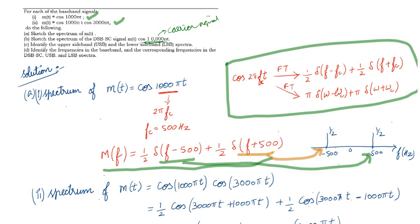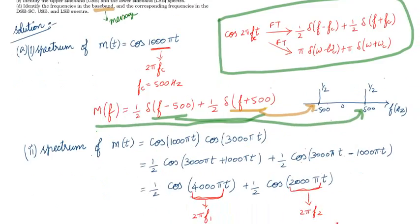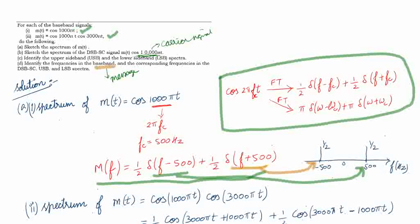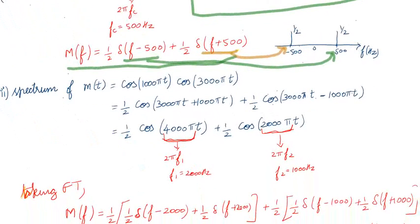Regarding the baseband frequencies: the baseband is nothing but the message signal. For the first message m(t) = cos(1000πt), the message frequency is 500 Hz. For the second message, cos(1000πt) · cos(3000πt) can be rewritten as (1/2)cos(4000πt) + (1/2)cos(2000πt), so the baseband frequencies present are 2000 Hz and 1000 Hz. Thanks for listening — any doubts, ask in the comment section.